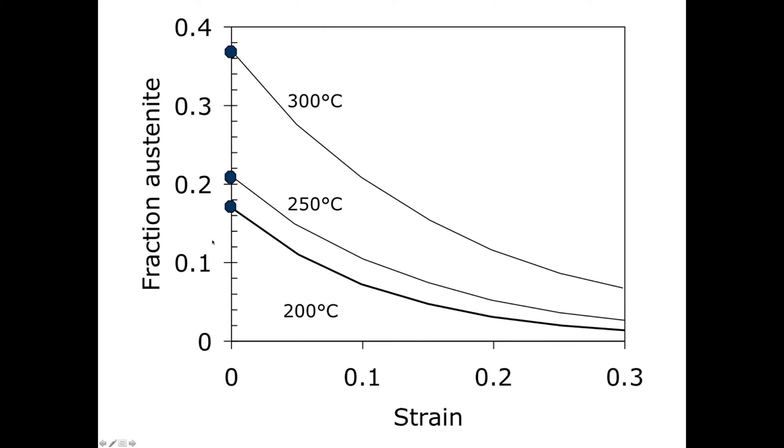Supposing I have three different carbide-free bainitic steels with different initial retained austenite contents. As I deform them, the retained austenite decreases according to these curves, and then fracture occurs at these red points, which represent approximately 10% retained austenite. The conclusion is that when the retained austenite content reaches about 10%, fracture happens.